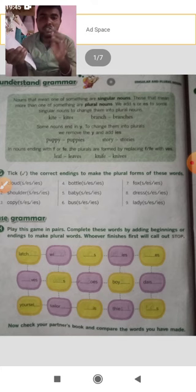Now look at the exercise. Tick the correct ending to make the plural forms of the given words. The singular words are in brackets with letter choices. For example: 'cloud' — the plural is 'clouds,' so you add 's.' Next, 'shoulder' — the plural is 'shoulders,' also add 's.'